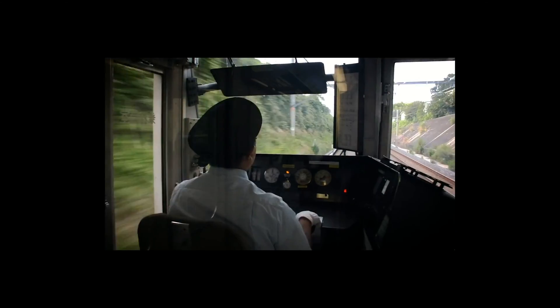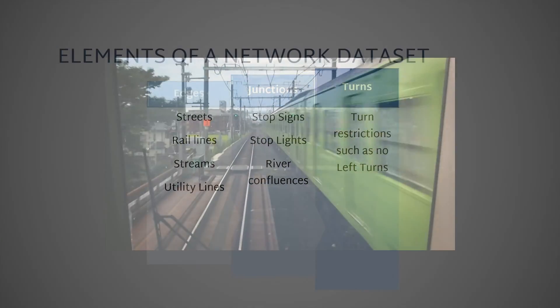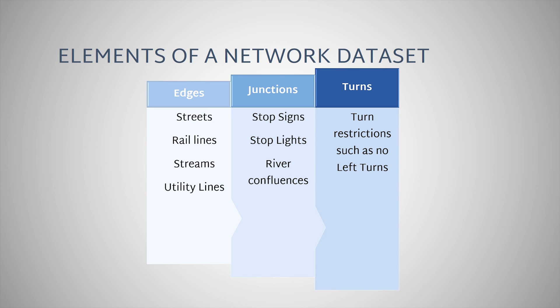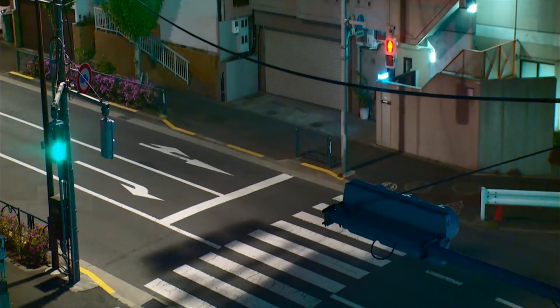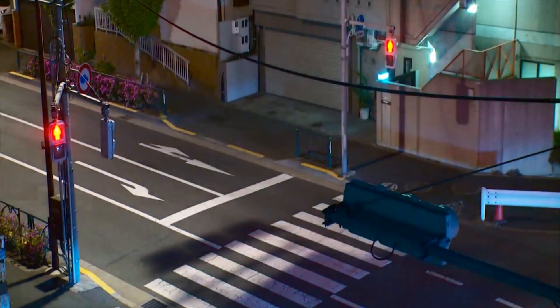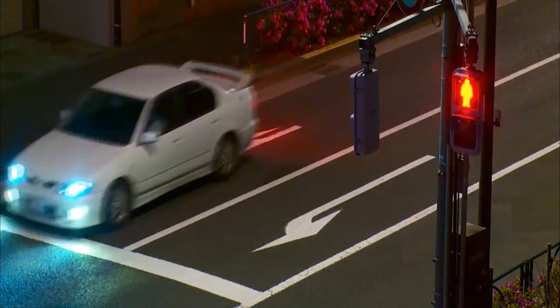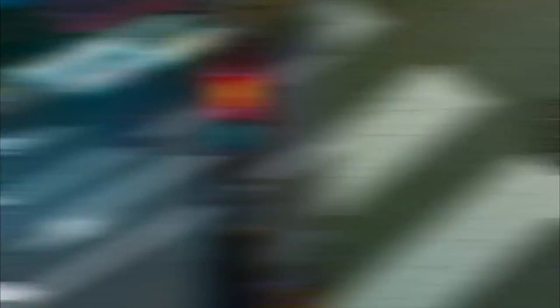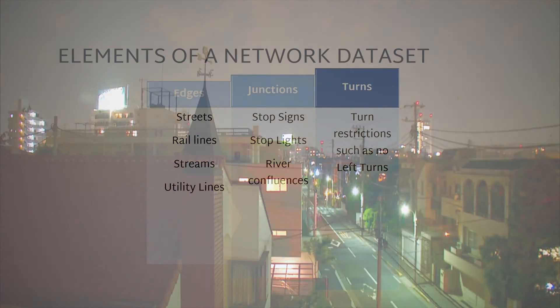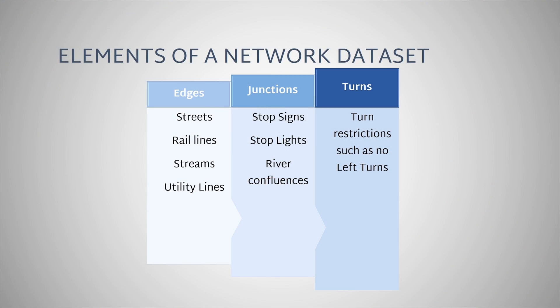Junctions connect edges and facilitate navigation from one edge to another. If a junction source feature is not provided, the GIS will create a junction feature class automatically when the data is first built. Examples of junctions include street intersections, dead ends, on ramps, off ramps, and stream network confluences. Attribute information can also be assigned to junctions, such as the time it takes to stop at a stop sign or stoplight. Turns are optional network elements that store additional connectivity rules that can affect movement between two or more edges. Examples include a road intersection where left turns are prohibited.